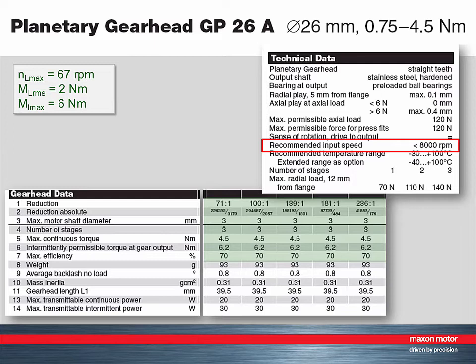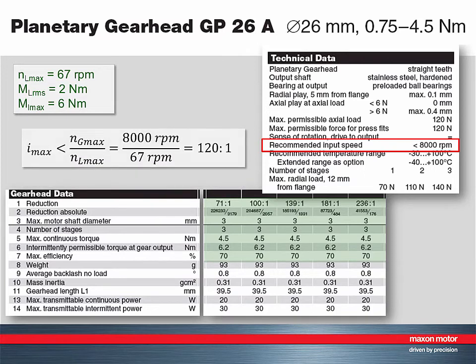It means that the motor speed should not exceed 8000 rpm for this gearhead. In order to obtain a load speed of 67 rpm, the reduction ratio of the gearhead should not exceed 8000 divided by 67, or 120 to 1. The next smaller gearhead reduction available is 100 to 1 — and that's the gearhead we've been looking for.